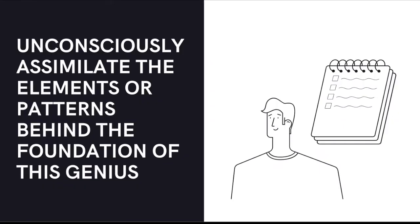And the second step is to unconsciously assimilate the elements or patterns behind the foundation of this genius. Now, at first, it's not going to be unconscious. At first, you're going to start studying this person, you're going to start studying their habits, how they feel, what they think and how they react and what they do in terms of work, whatever you're trying to model. You would want to assimilate all the information and elements and patterns behind the foundation of their genius and their success.